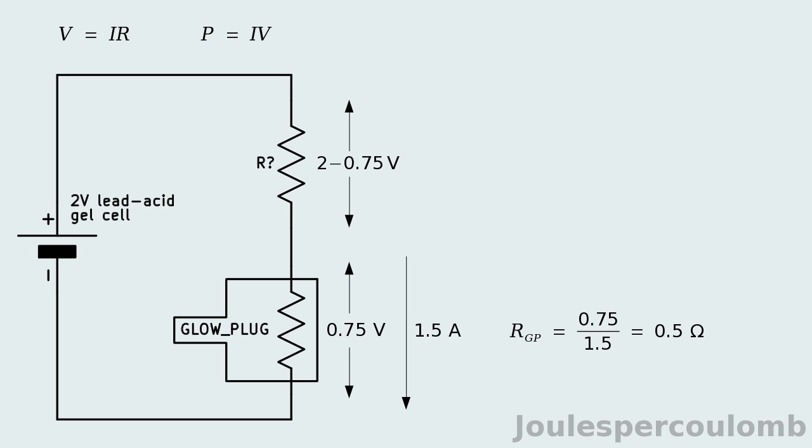If I knew what material the glow plug's heating element is made from, I might be able to correct for this change. However, my second assumption will be that the glow plug's resistance is always half an ohm when it's operating. Hopefully, this will be reasonable, so long as the power output isn't increased or decreased too much from 1.125 watts.